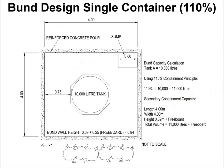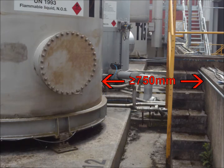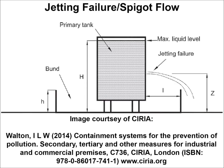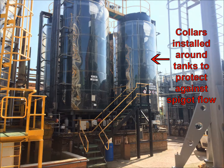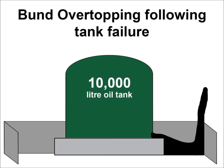Dimensions. Once you have ascertained the minimum bund capacity, you can design the size and shape of your bund. Generally, a bund will be designed to have a small footprint so it doesn't take up too much space on site. As a minimum, you should have a 750mm separation distance between the primary container and the bund walls to allow for easy tank inspections. However, you may wish to increase this distance to protect against spigot flow, where a leak in the wall of a tank allows liquid to jet out and pass over the bund wall before it reaches the floor. You can also combat spigot flow by installing specialist infrastructure or by constructing taller bund walls, which will also increase the bund capacity and protect against the tidal wave effect.